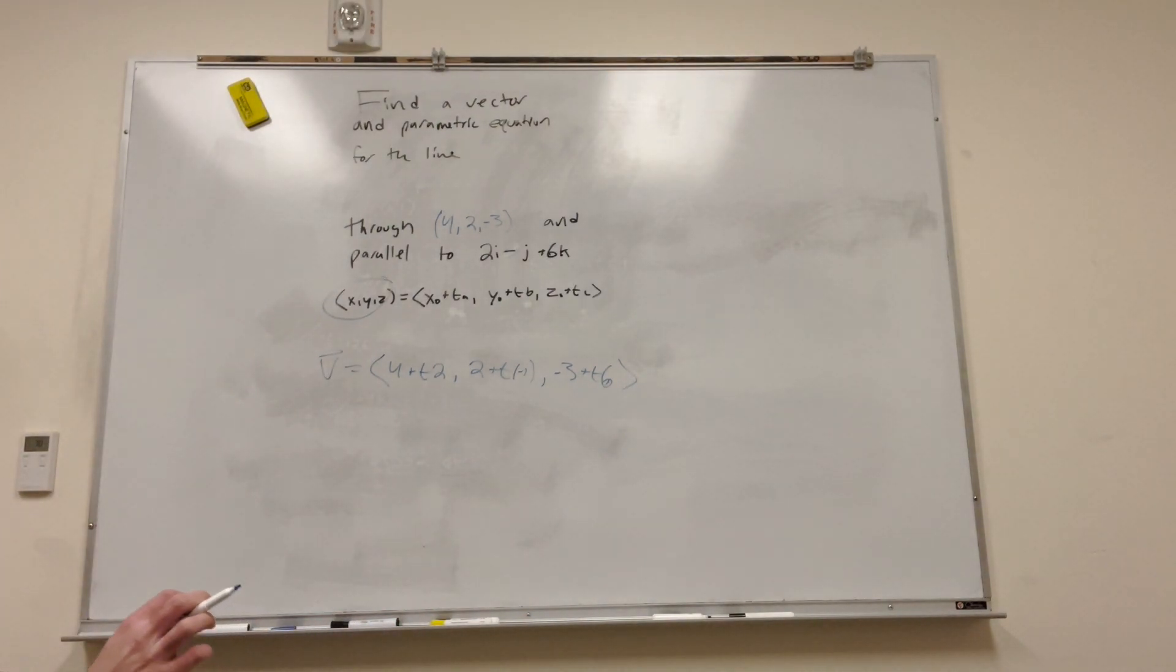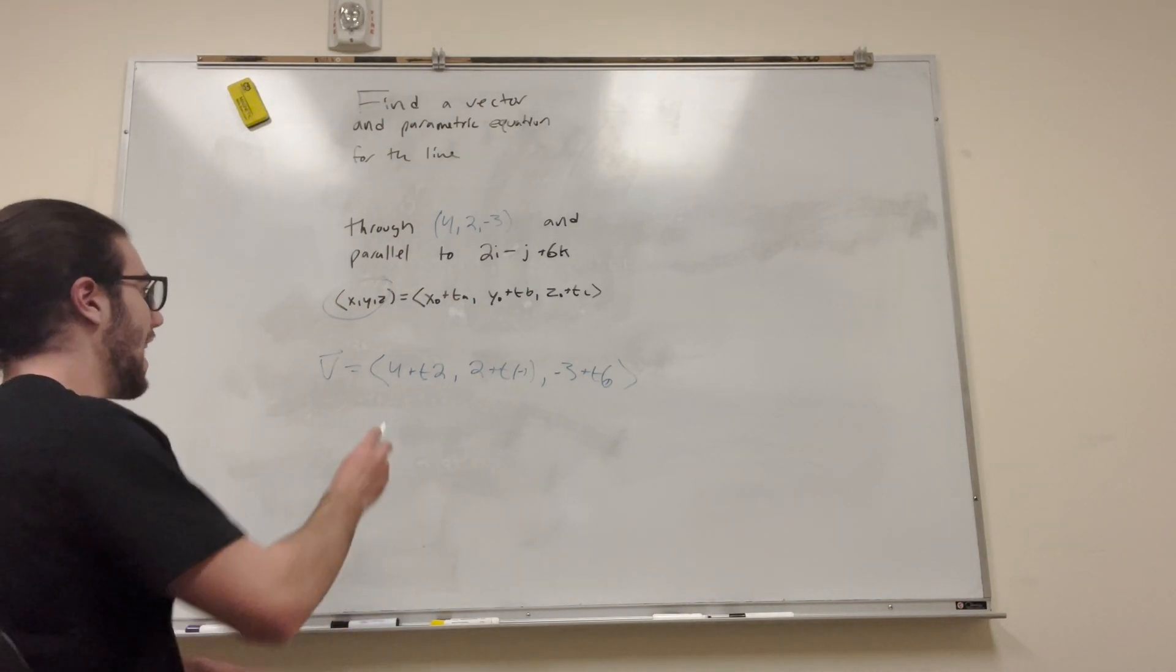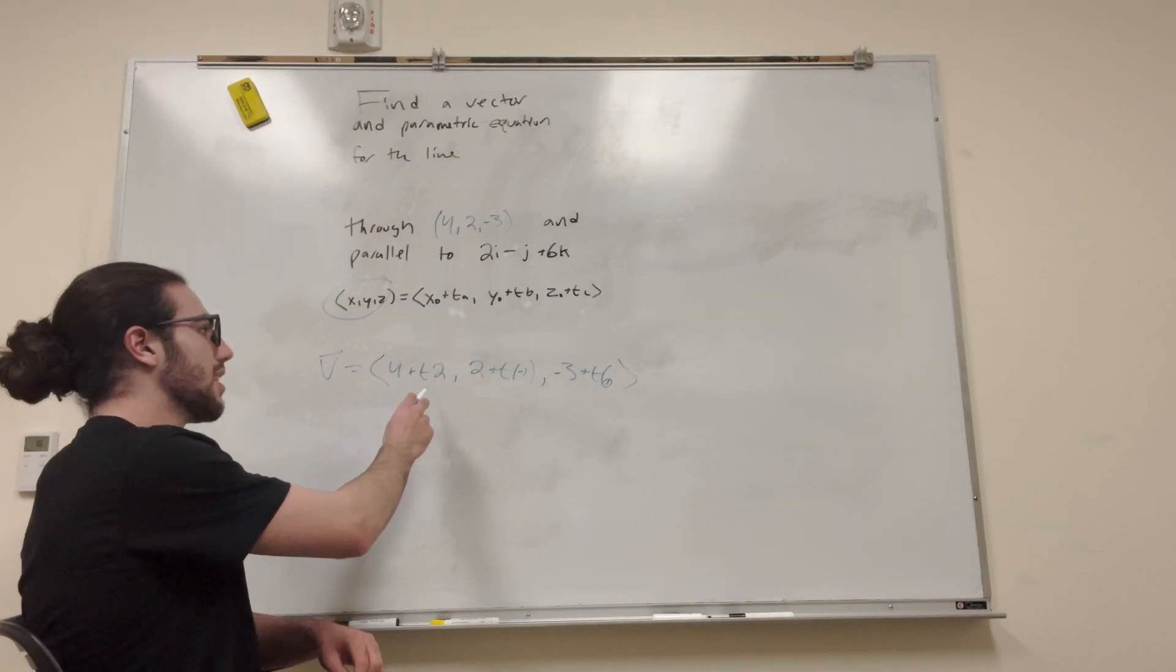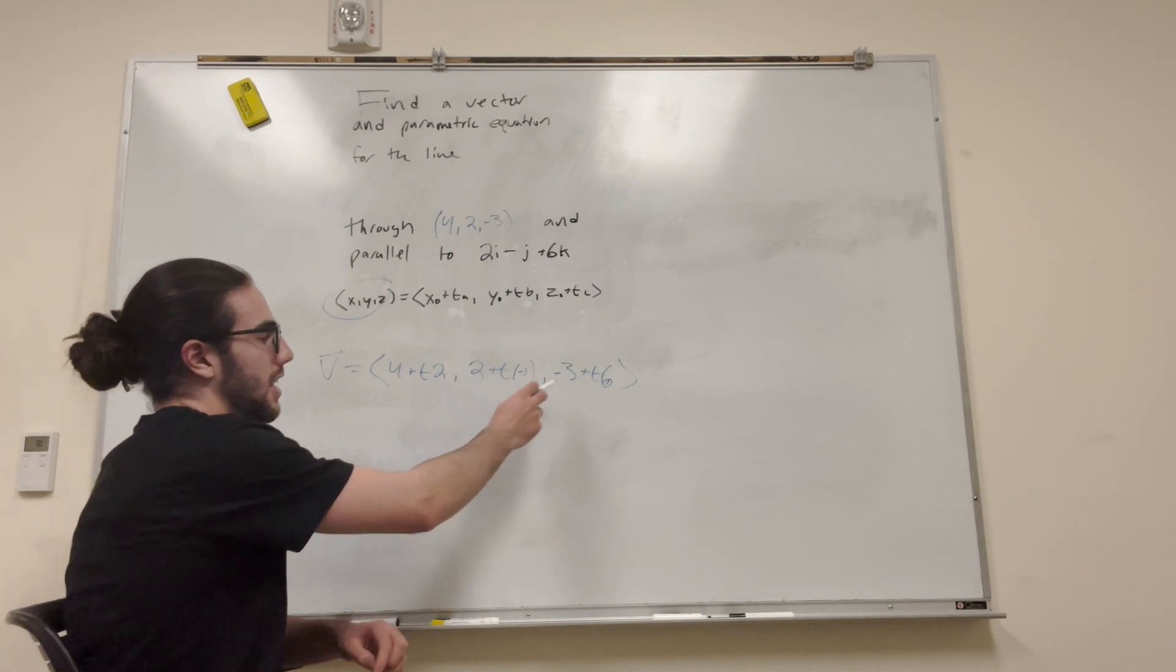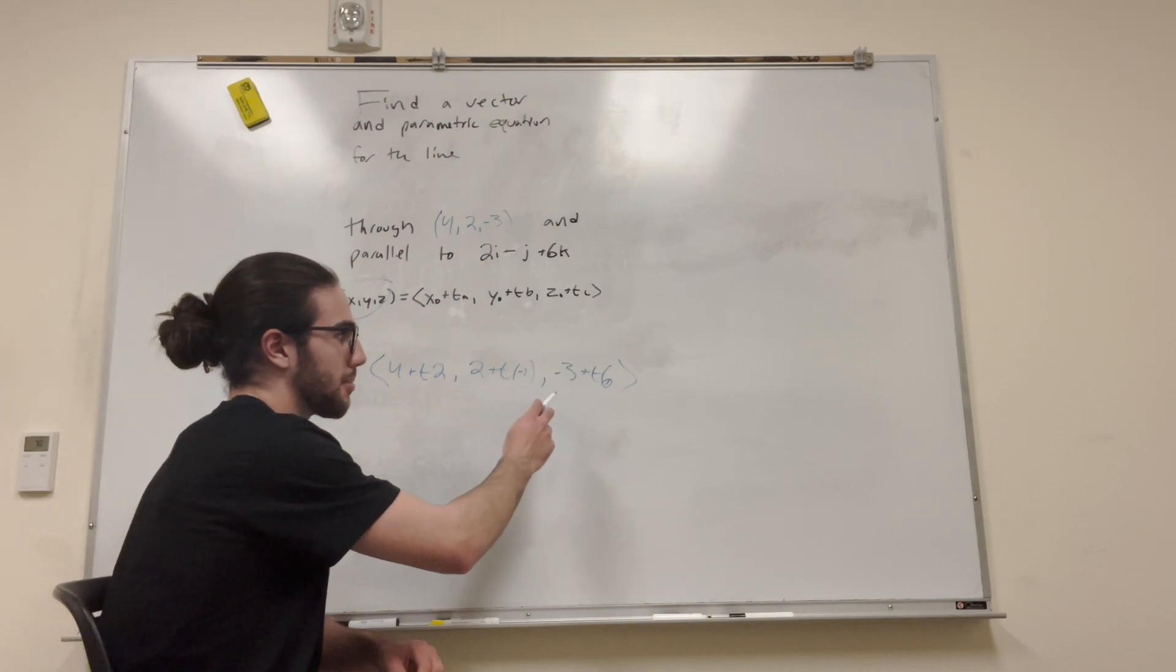All right, so this is not actually a vector form, but this tells us a vector form. What this says is that X is equal to 4 plus 2T, Y is equal to 2 minus T, and Z is equal to negative 3 plus 6T.